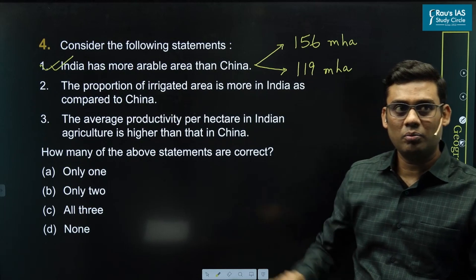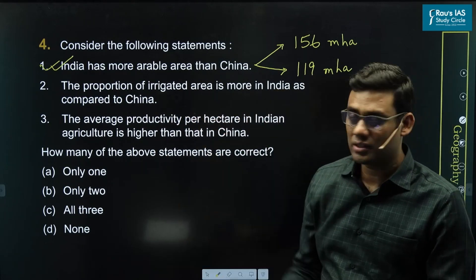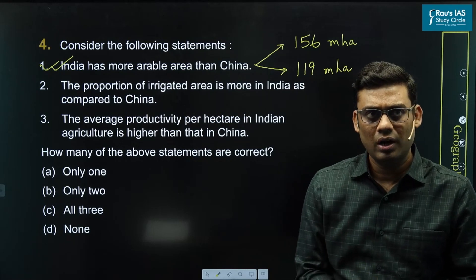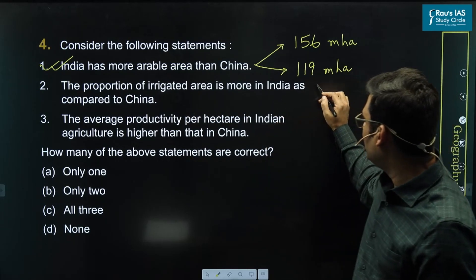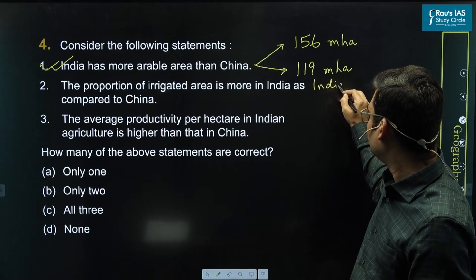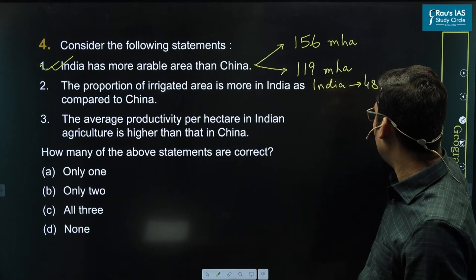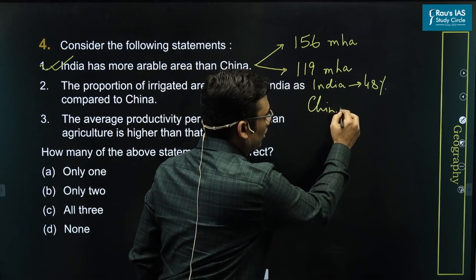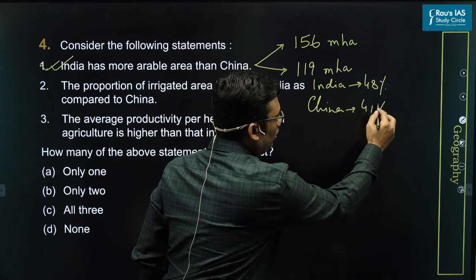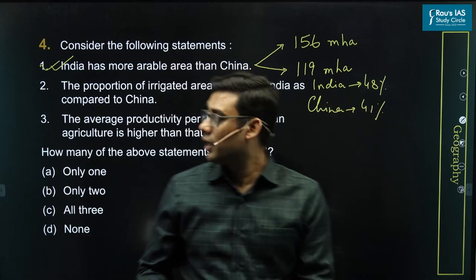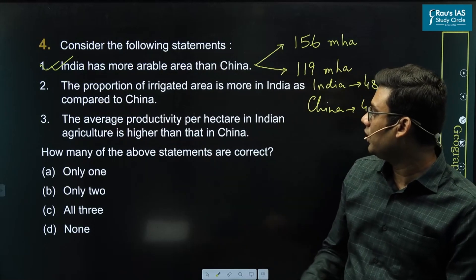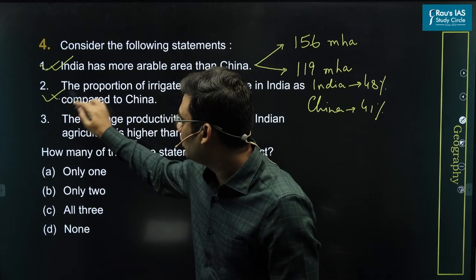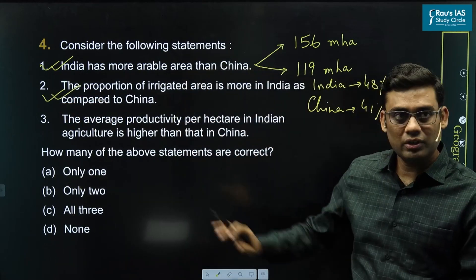The second statement: the proportion of irrigated area is more in India as compared to China. This has been recently in the news as well. Going by the numbers, the proportion of irrigated land in India is almost 48%, whereas in China it is 41%. So the second statement is also correct.